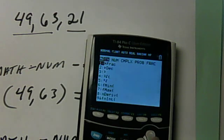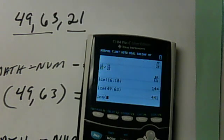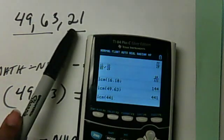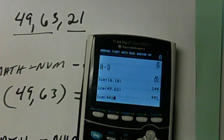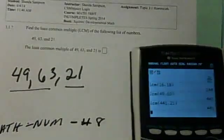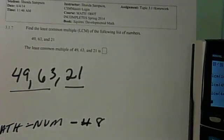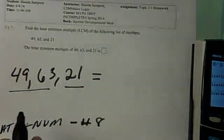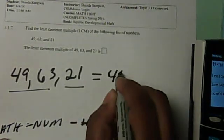So I'm going to go math over to num, and then hit number 8 again, and now I'm going to put in this 441, comma, my third number, which we see up here is 21. Now, this final answer is going to be the answer to the LCM, which is 441. So the LCM between 49, 63, and 21 is 441.